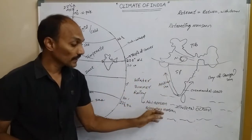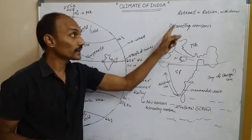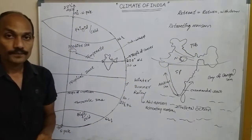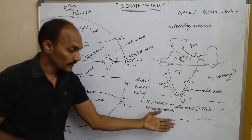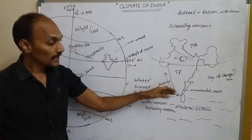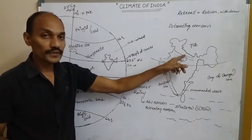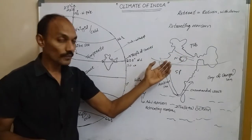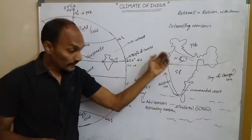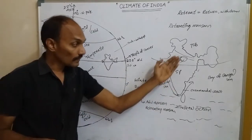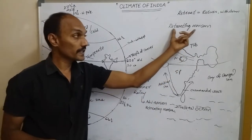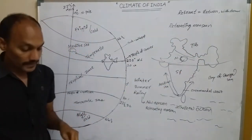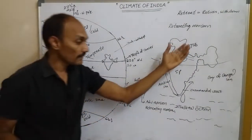In the months of October and November, the southwest monsoon returns. The withdrawal of the southwest monsoon is called the retreating monsoon, also known as the northeast monsoon.